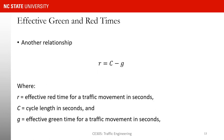Finally, there is one last relationship with respect to effective green and effective red: effective red equals your cycle length minus effective green g, or equivalently, your cycle length equals your effective red plus effective green.